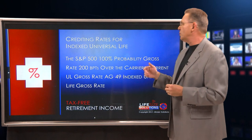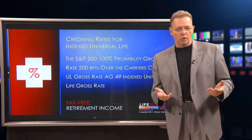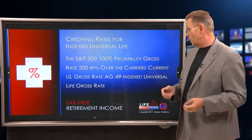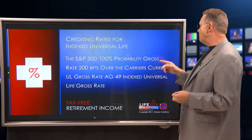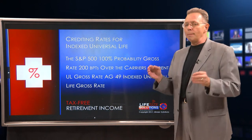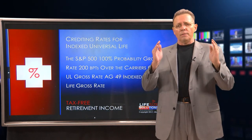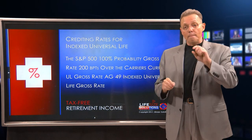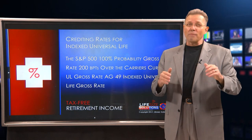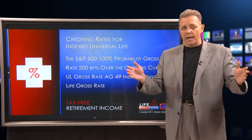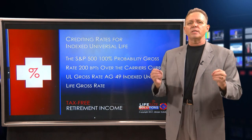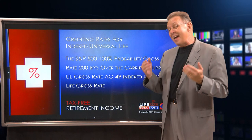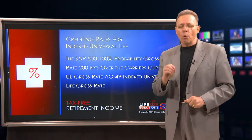Now, crediting rates for indexed universal life. The only reason I'm going to harp on this is because this is the main product line on the street getting so much attention. The S&P 500 is a 100% probability gross. A carrier came out with rates — they used two 20-year tranches month to month, about 400-plus segments they looked at, on an annual point-to-point basis. They asked what the probability rate for the S&P 500 was under these two 20-year tranches, and that average is right around 5.5%.